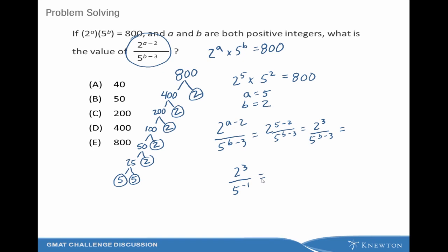How are we supposed to deal with a negative exponent in the denominator? Well, 5 to the negative 1 is 1 over 5 to the 1, and dividing by one-fifth is the same as multiplying by the reciprocal, which is 5.